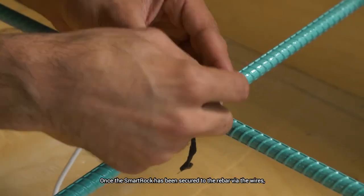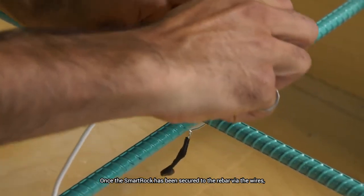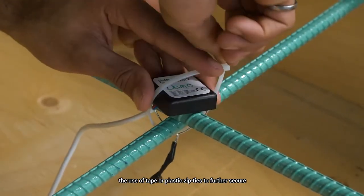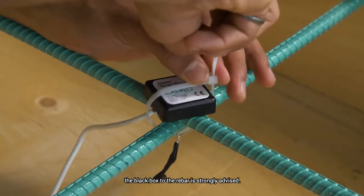Once the SmartRock has been secured to the rebar via the wires, the use of tape or plastic zip ties to further secure the black box to the rebar is strongly advised. This will ensure that the SmartRock remains in its upright position during the concrete pour.